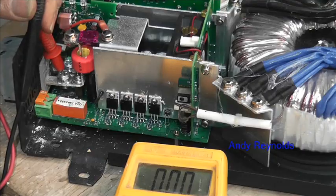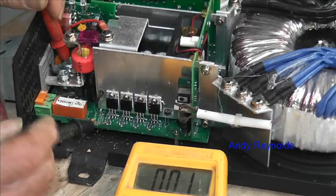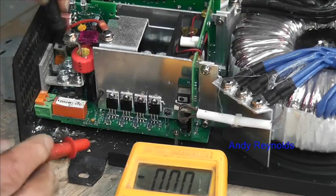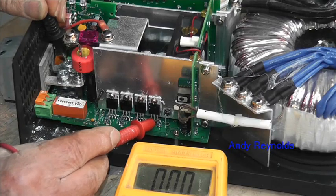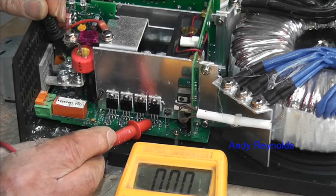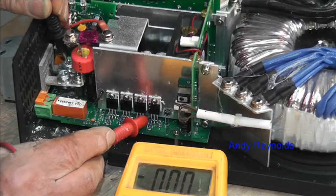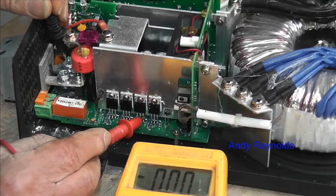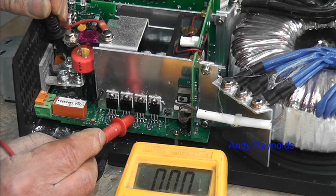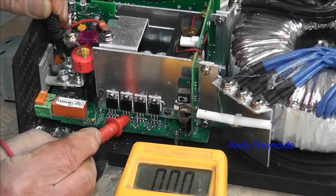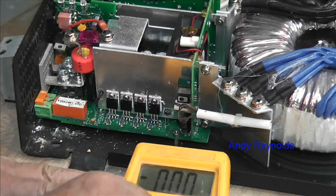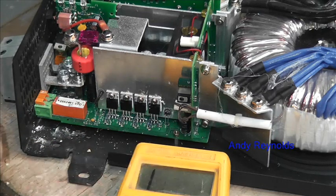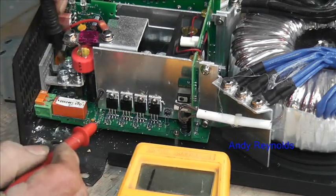So let's go to the negative. On the negative we've got nothing, we've got nothing, we've got nothing. These should be switching the negative. Now let's just move it across to continuity.